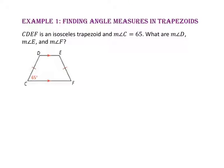In example 1, we will find angle measures in trapezoids. Quadrilateral CDEF is an isosceles trapezoid, and the measure of angle C is 65. What are the measures of angles D, E, and F?